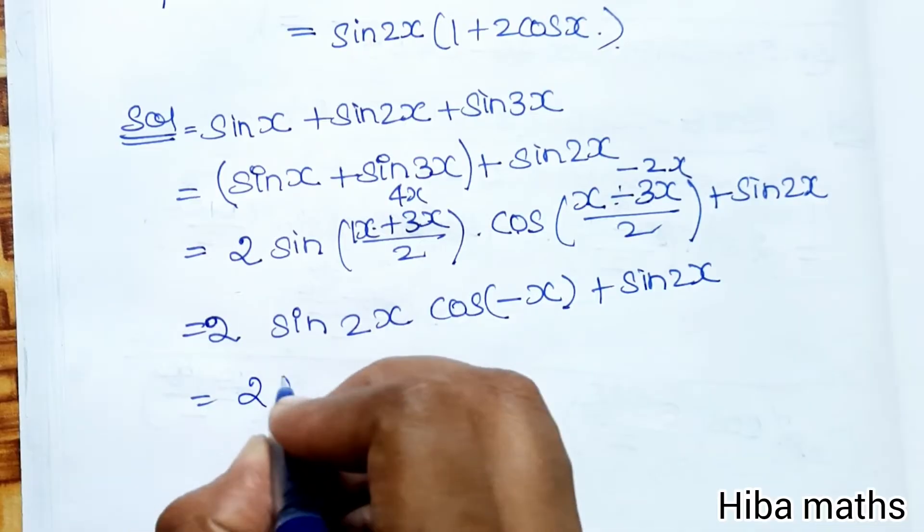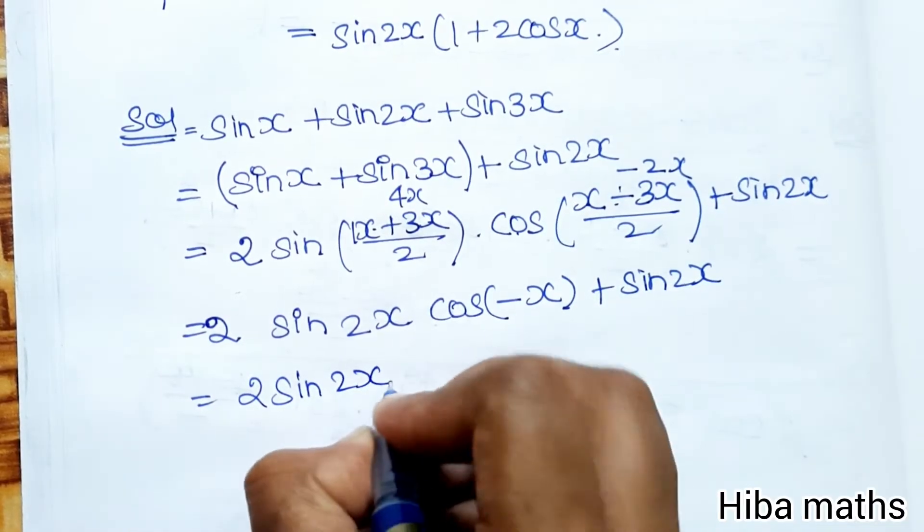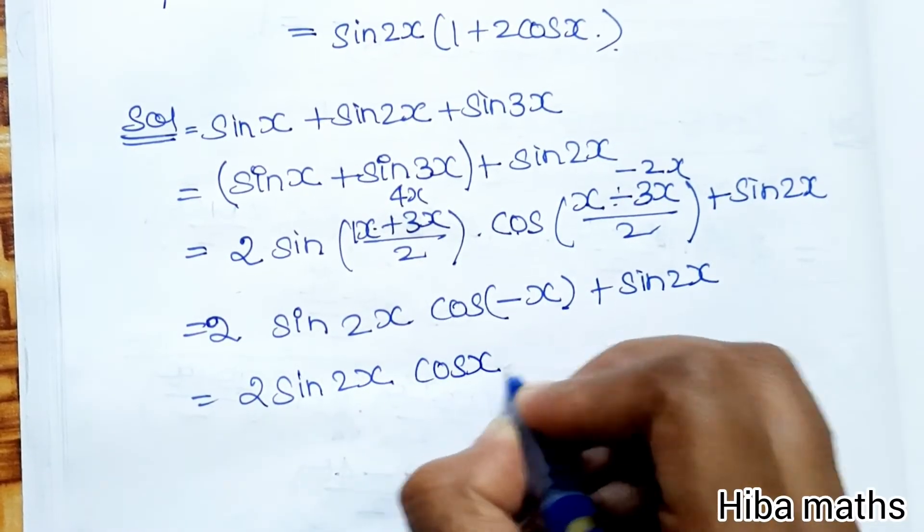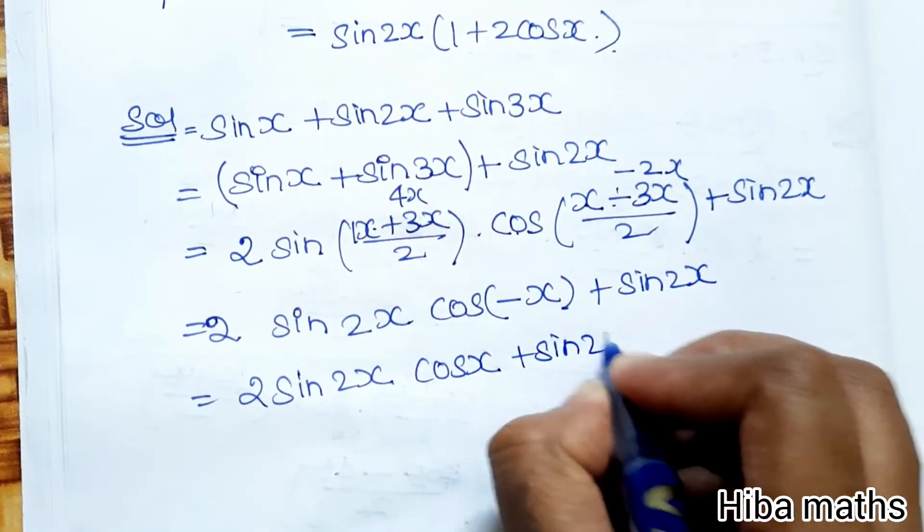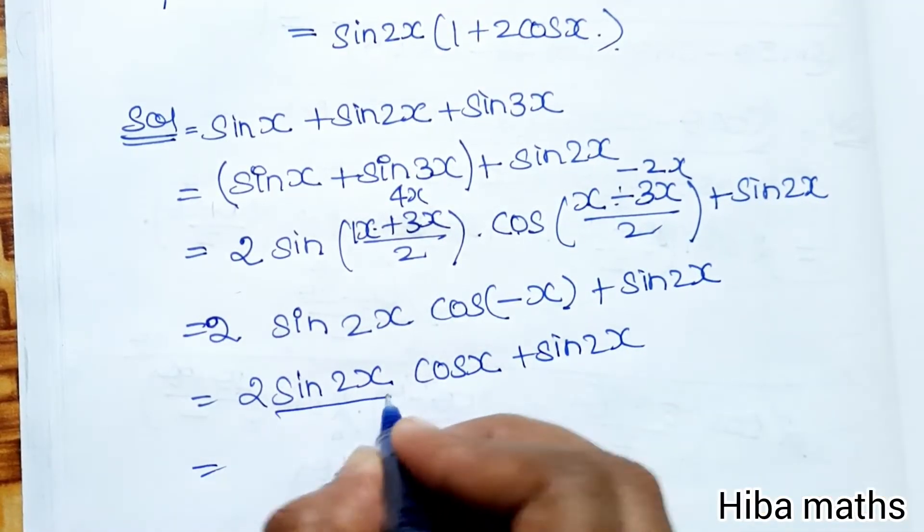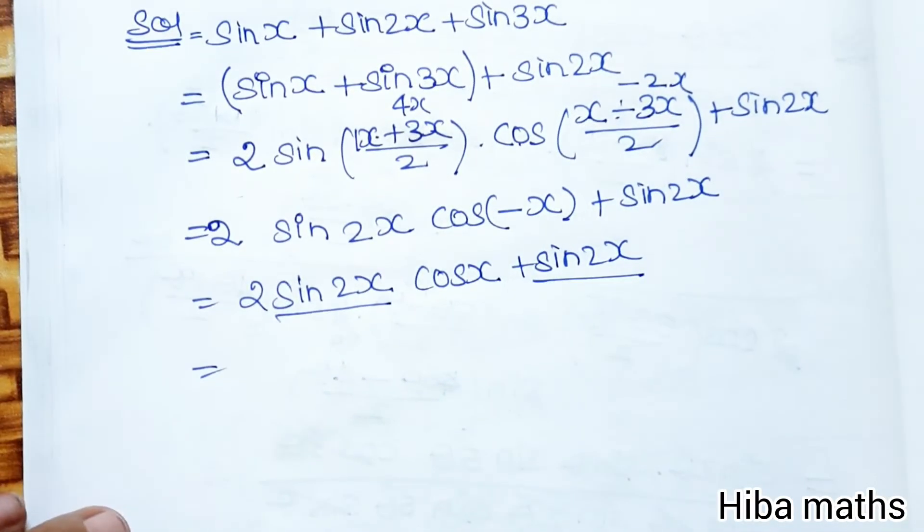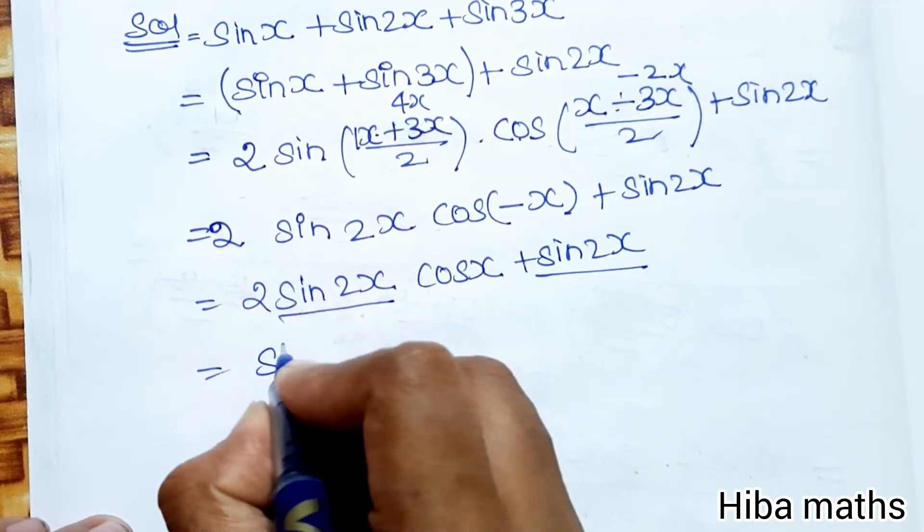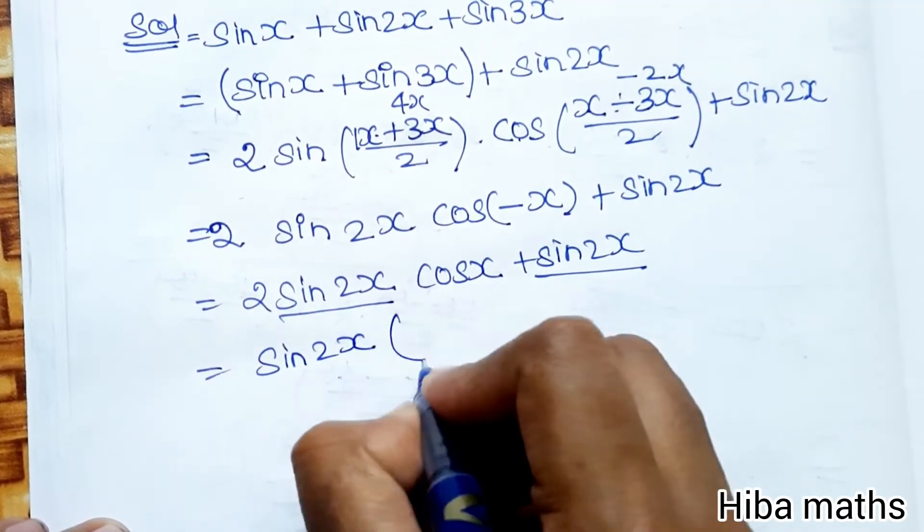Next line: cos is an even function, so cos(-x) = cos(x). Therefore, we have 2 sin 2x cos x + sin 2x. Taking sin 2x common from these two terms.